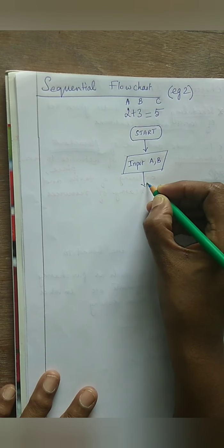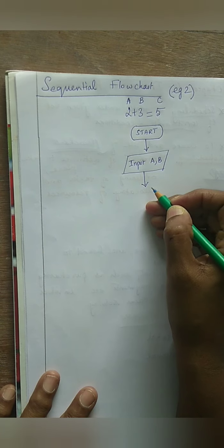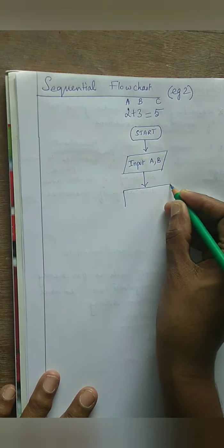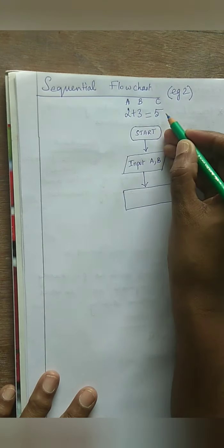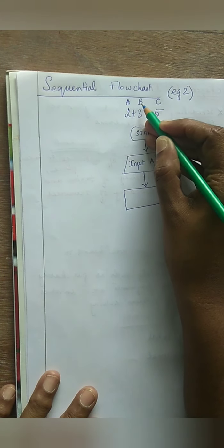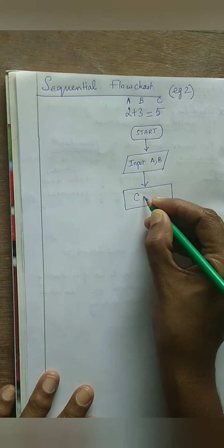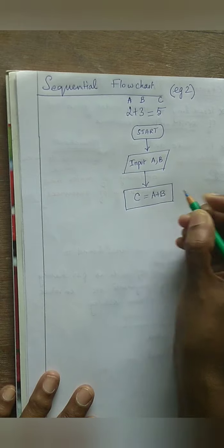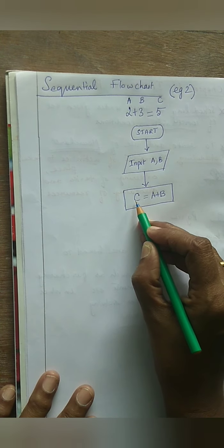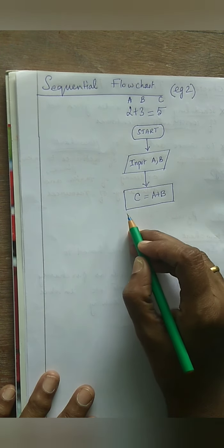Now I have given the input. The next step is the process, represented using the rectangle. The process here is: add A plus B and the result 5 will be stored in variable C. So I write C equal to A plus B. I am going to add 2 plus 3 and the result 5 will be stored in C. This is the symbol for your process. Now my process is complete.